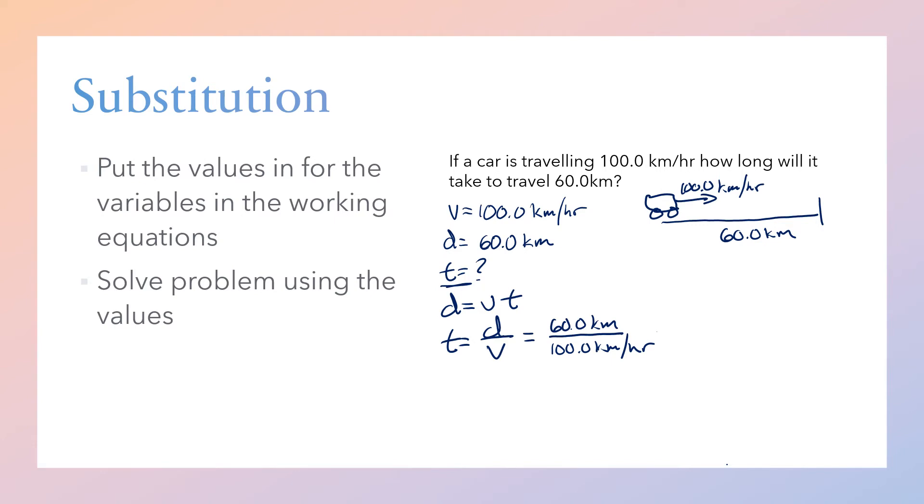We've put in the values we're going to use, and now we can solve the problem. We have 60 divided by 100, which is 0.6. Since it's kilometers divided by kilometers per hour, we'll have 0.6 hours as our answer.